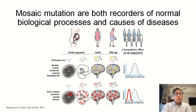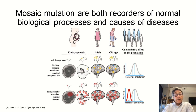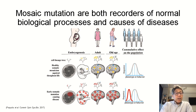Mosaic mutations are both recorders of normal biological processes and can cause disease. These mutations can arise during embryogenesis, adulthood, and old age, and they can have effects on the individual or cumulative effects on the population. In the middle, we can see the effects of healthy somatic mosaicism variants acquired throughout life. They are inherited by daughter cells — indicated by these branching figures — and spread throughout the body without shifting the phenotype or changing behavior, so they're inconsequential to the person.